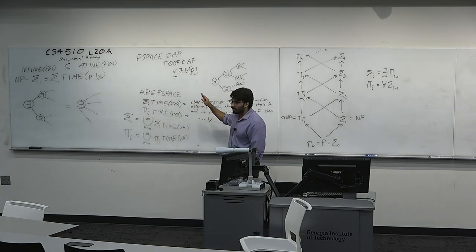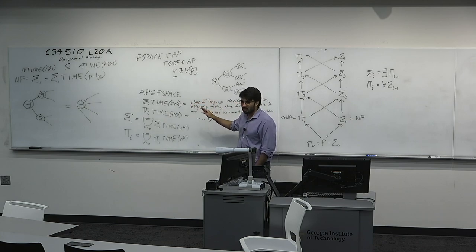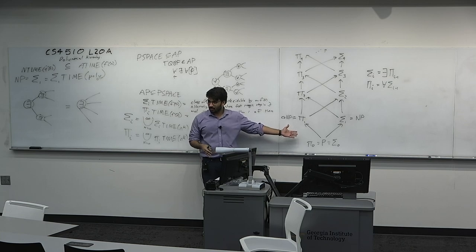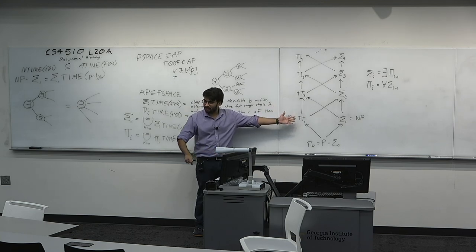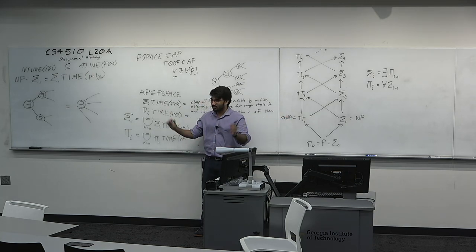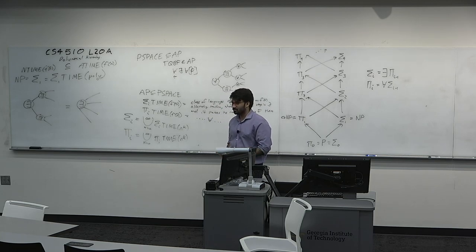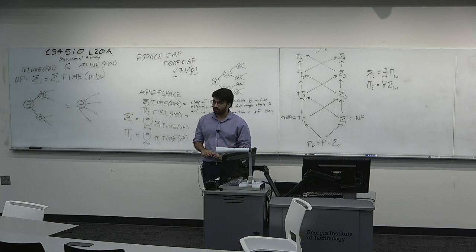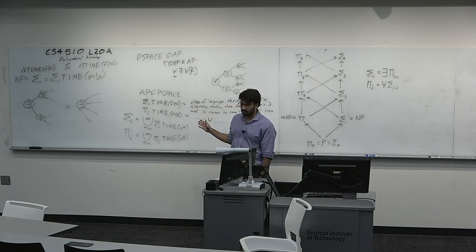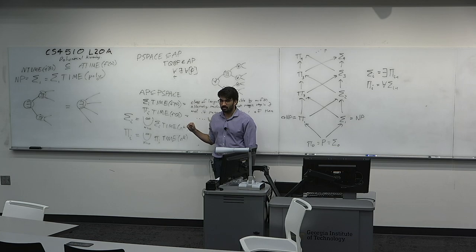These are three definitions of the polynomial hierarchy: alternating quantifiers of predicates, oracle definitions, and alternating Turing machines — which we've loosely related to each other. The polynomial hierarchy is a weird, alien device. Any questions on the definition before we talk about how cool the polynomial hierarchy is and why we care? We only talked about the definition just now.